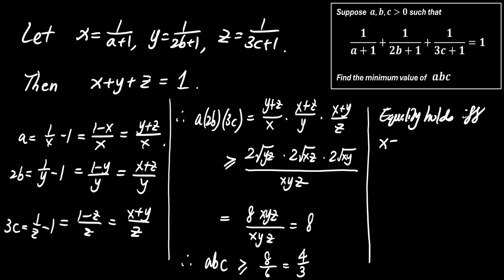Equality holds when X equals Y equals Z, which must be 1 third. In that case, A equals 2, B equals 1, and C equals 2 thirds.